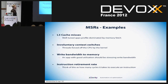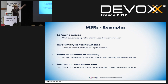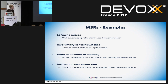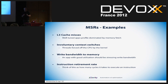Let's do some examples of other things you can do with model-specific registers. You can look at L3 cache misses. Remember what we said: the memory profile of a well-tuned app is dominated by memory fetch. So if you have a model-specific register which tells you how many L3 cache misses you've got, it gives you a very good number on how well-tuned your app is — effectively telling you how many times your application is walking a kilometer down the road to get its next piece of data.